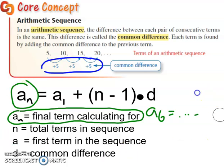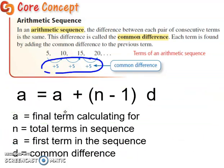Well, I'm going to erase this because it's probably a little bit confusing. Oh, no, I got rid of it. I feel like Britney Spears. Alright, so a_n is going to be the final term that we're calculating for. n is the total of terms in the sequence. a_1 is going to be that first term in the sequence. And d will be the common difference that we are adding in.